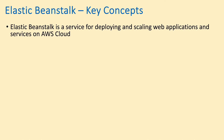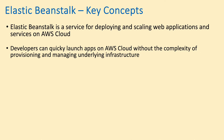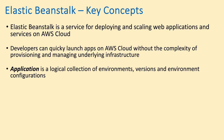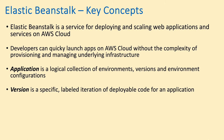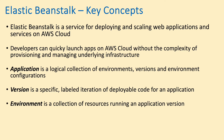Let me review some key concepts in Elastic Beanstalk. Elastic Beanstalk is the service for deploying and scaling web applications and services on AWS cloud. Developers can quickly launch applications without the complexity of provisioning and managing underlying infrastructure. An application is a logical collection of environments, versions, and environment configurations. A version is a specific labeled iteration of deployable code for an application. An environment is the collection of resources running an application version.